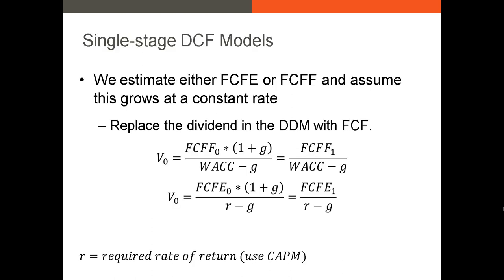In the last video I introduced the single-stage DCF model where we either calculated free cash flows to equity or free cash flows to the firm, and assumed those free cash flows continue to grow at a constant rate. For free cash flows to the firm, we grow that amount by one plus a growth rate and discount at the weighted average cost of capital. For free cash flows to equity, we apply a growth rate and discount at the required return — sometimes called the market cap rate — which we predict using the CAPM.